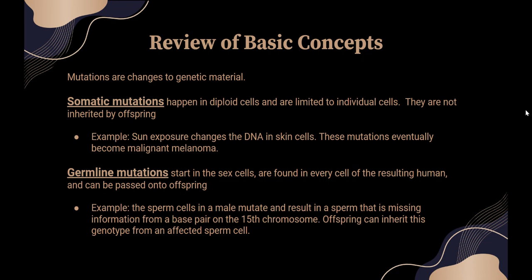There are about 15,000 things that can go wrong that you can test for. Aneuploidy is usually associated with aging eggs. But deletions, duplications, and inversions can occur in either gender.